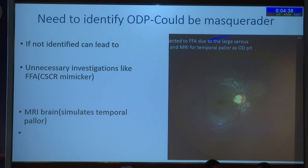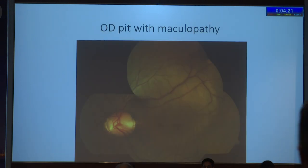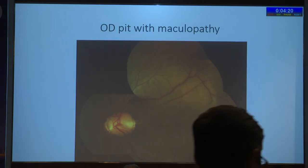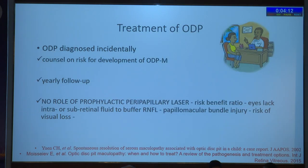All you need is a 90-diopter lens. Whenever there is a case like CSR, look at the disc always. Not all CSR cases are CSR — it may be an ODPT with maculopathy. Look at the disc, look for the greyish thing, and sometimes you will come across two or three pits. On OCT you will have a multi-layered fluid, similar to CSR.